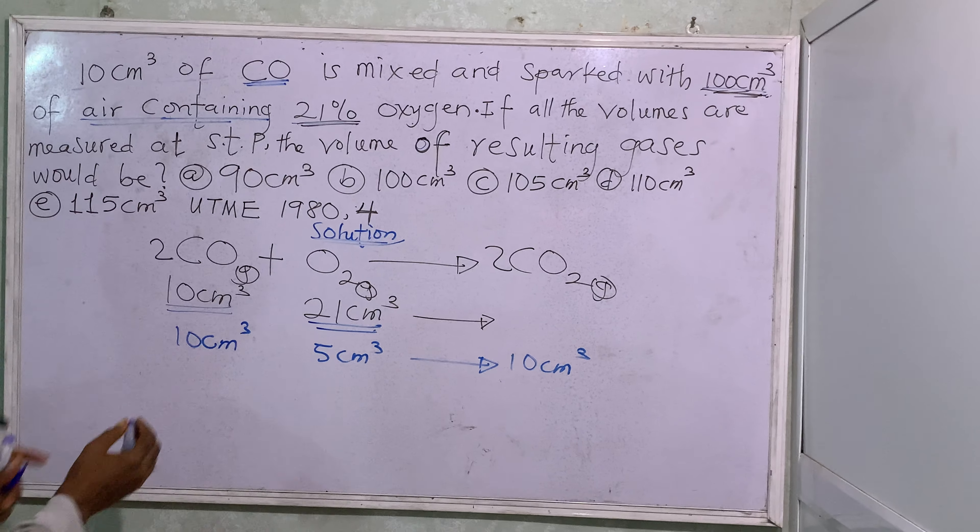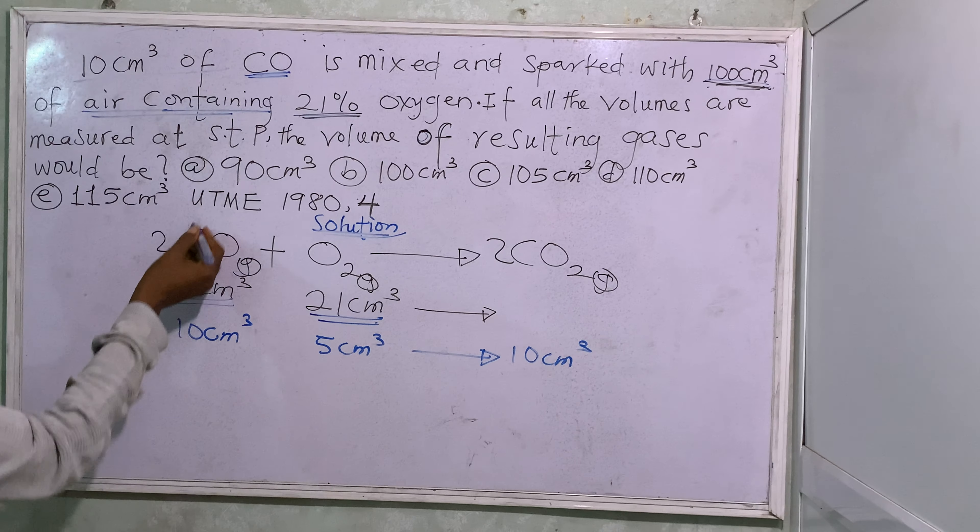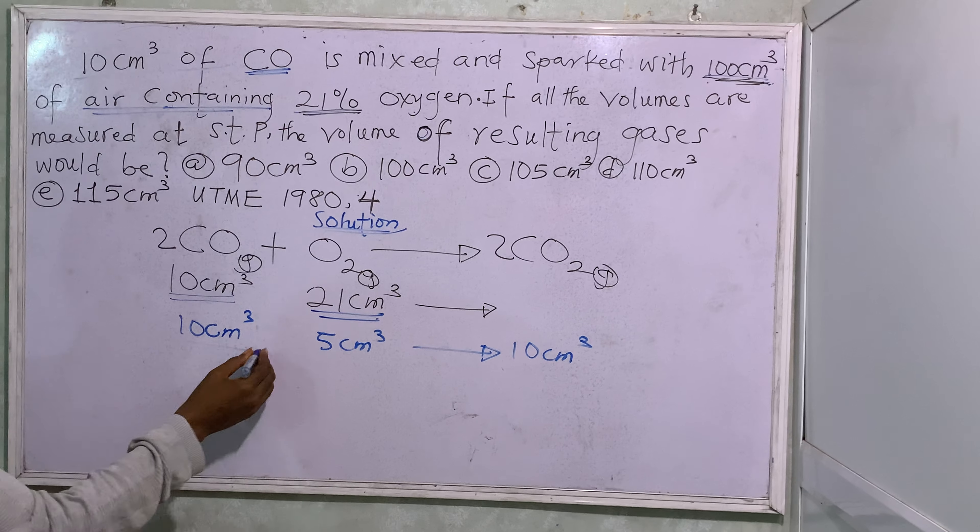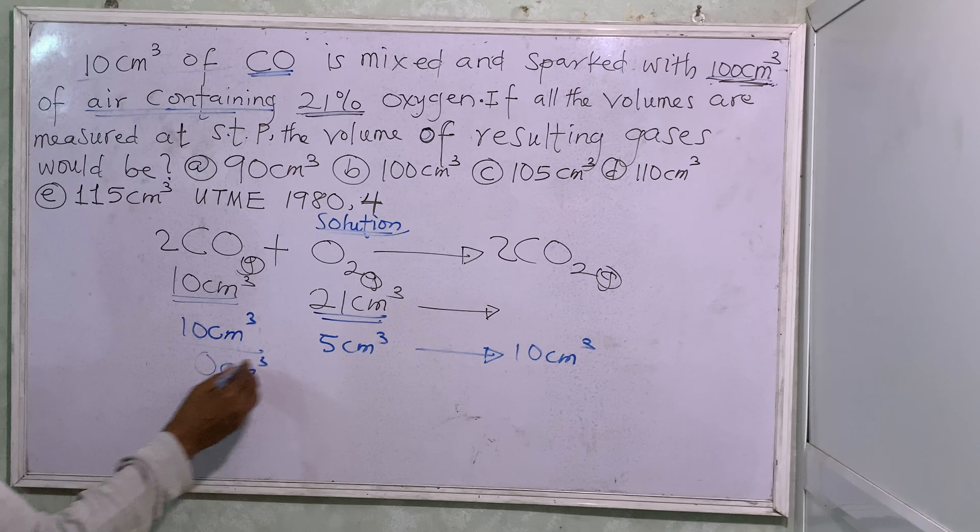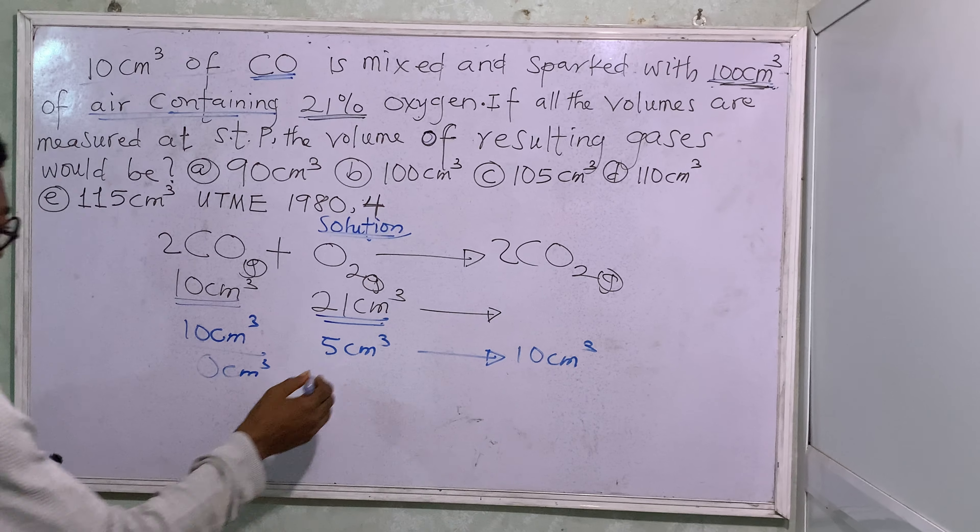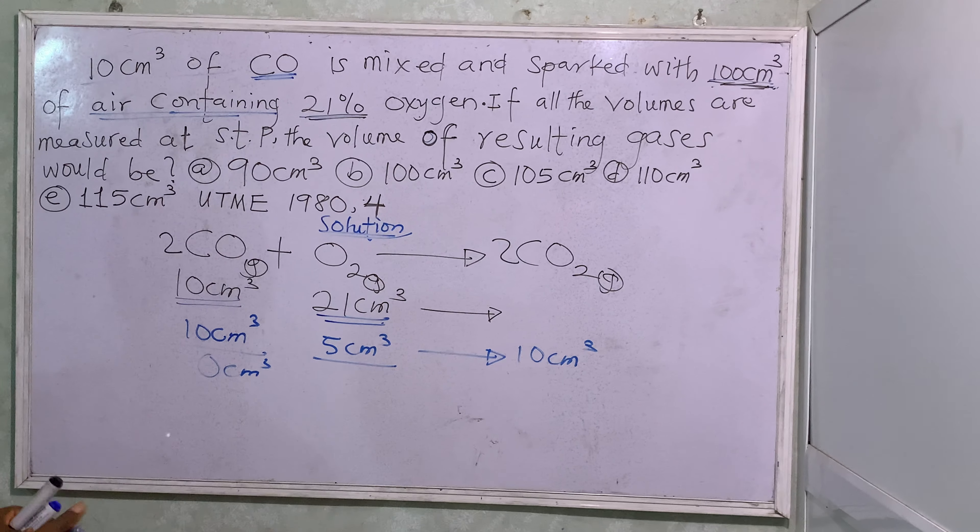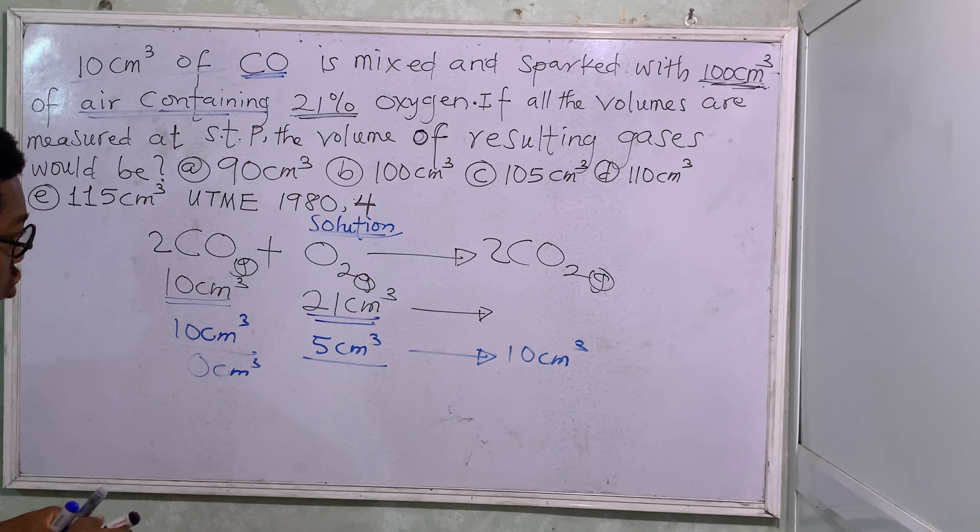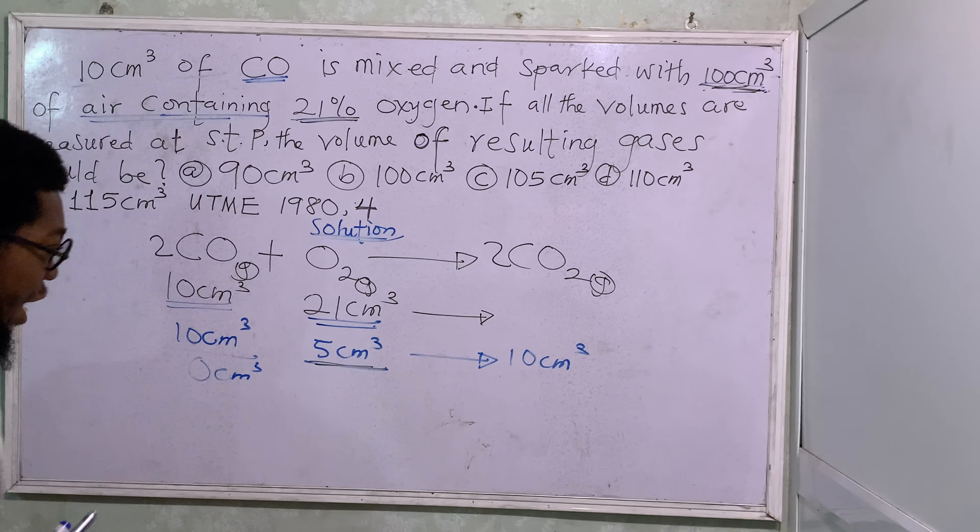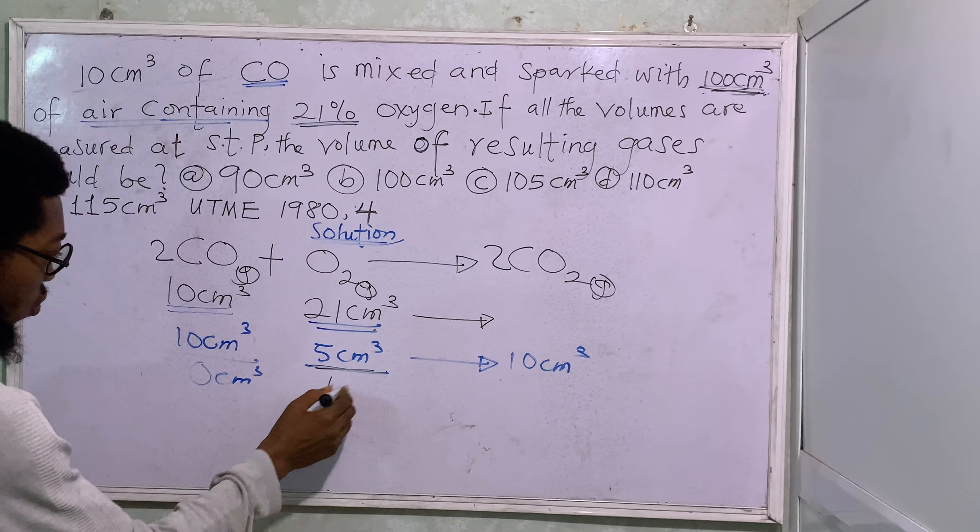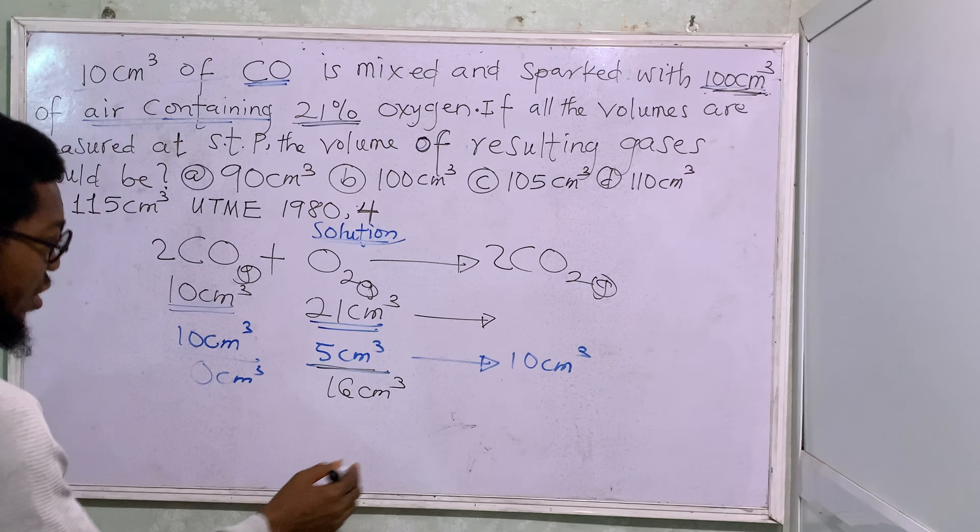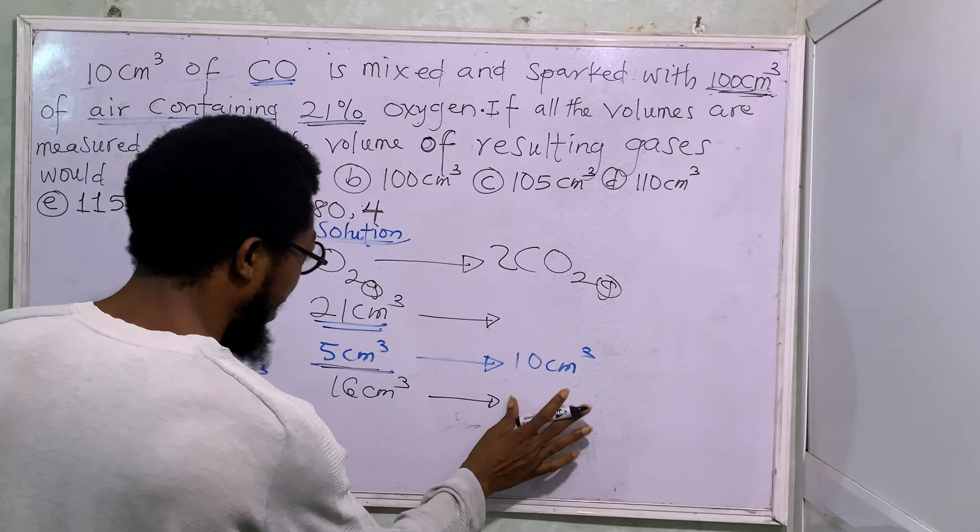So therefore, we can now see that this is the amount that we use. So do we have any CO left? The answer is 0 cm³ remains here. Out of the 21 oxygen, do we have any O₂ left? Yes. 5 out of 21, we have 16 cm³ left. Then, our product, 10 cm³.